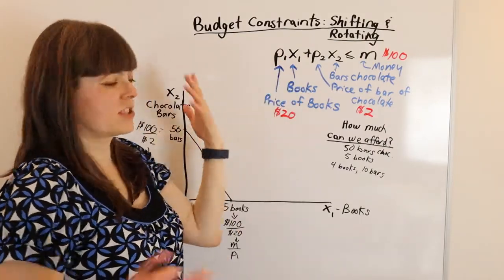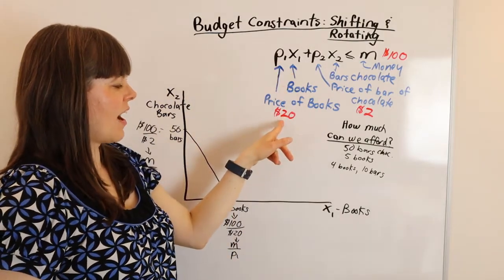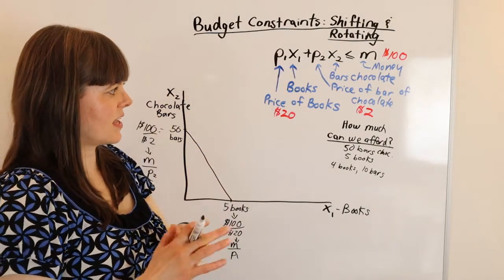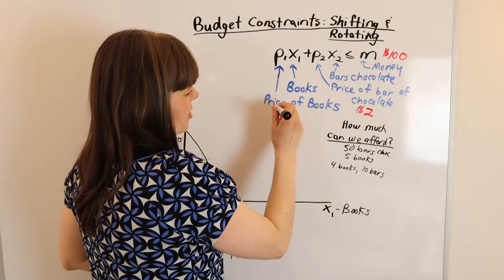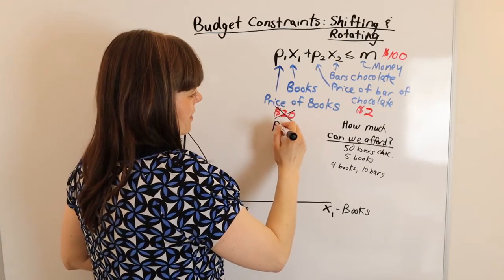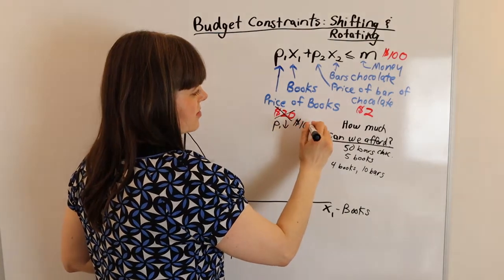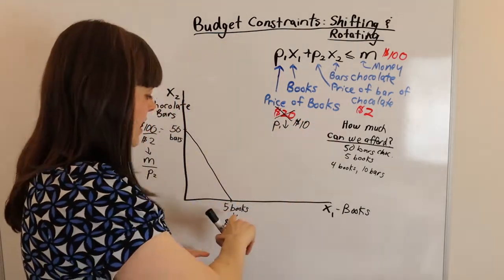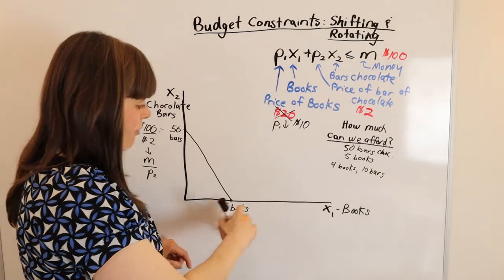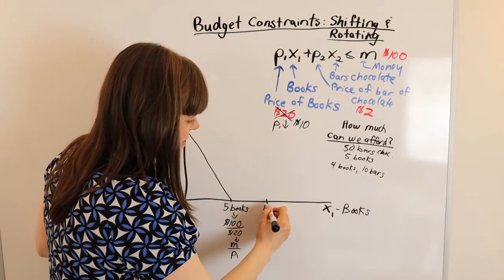So let's just see when the price of a good changes. How does that change the budget constraint? Let's say the price of books goes down. That's P1. It goes down from $20 to $10. Now suddenly, instead of affording five books, we can afford twice as many. We can afford 10 books.